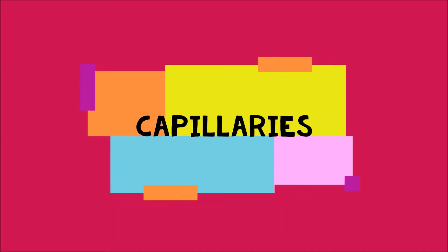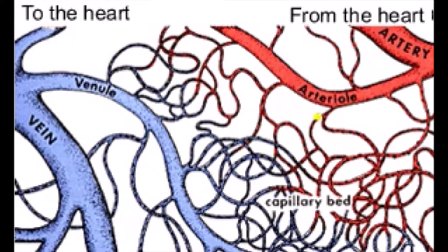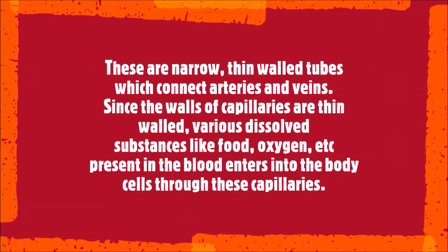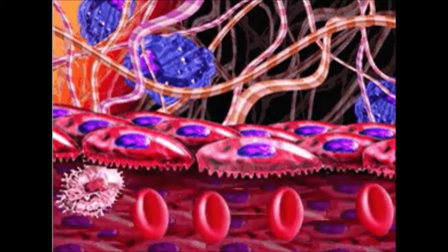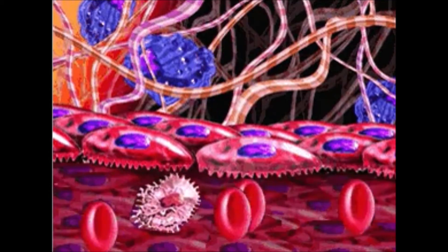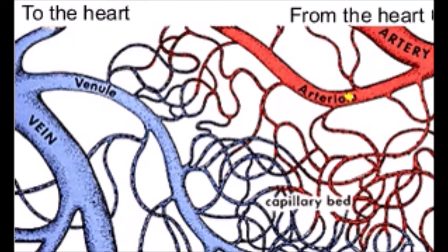Capillaries are narrow, thin-walled tubes which connect arteries and veins. Since the walls are thin, various dissolved substances like food and oxygen present in the blood enter body cells through these capillaries. Simultaneously, waste substances like carbon dioxide enter the capillaries. Thus, the exchange of materials takes place between body cells and the blood. Oxygenated blood from arteries enters the capillaries, and deoxygenated blood from the capillaries enters the veins joined to the other end.